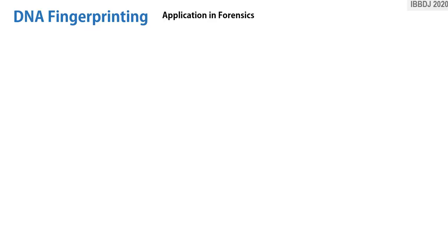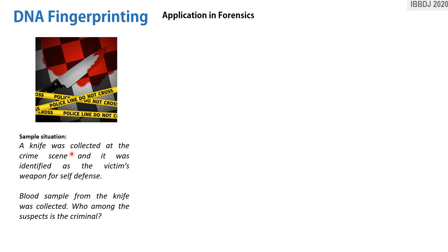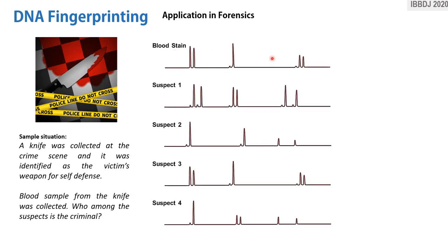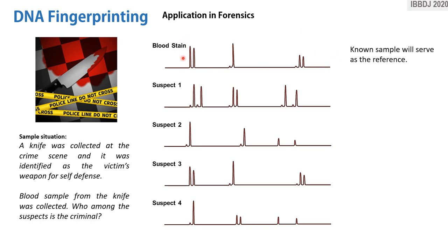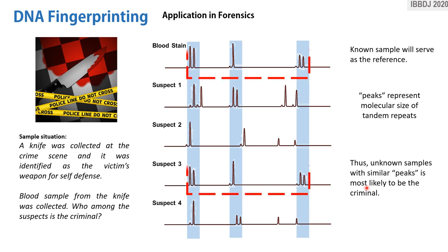Due to the efficient discriminatory ability of DNA fingerprinting, it is used in forensics to identify perpetrators. In a sample scenario, a victim stabbed an attacker with a knife, so the blood on the knife is assumed to be from the attacker. After swabbing the knife and collecting blood samples from suspects, samples are subjected to DNA extraction, amplification, and gel electrophoresis. Results are shown as peaks rather than bands, where peaks represent molecular size of tandem repeats. The blood from the knife serves as the reference, and the suspect whose peaks match is most likely the criminal — in this case, suspect three.